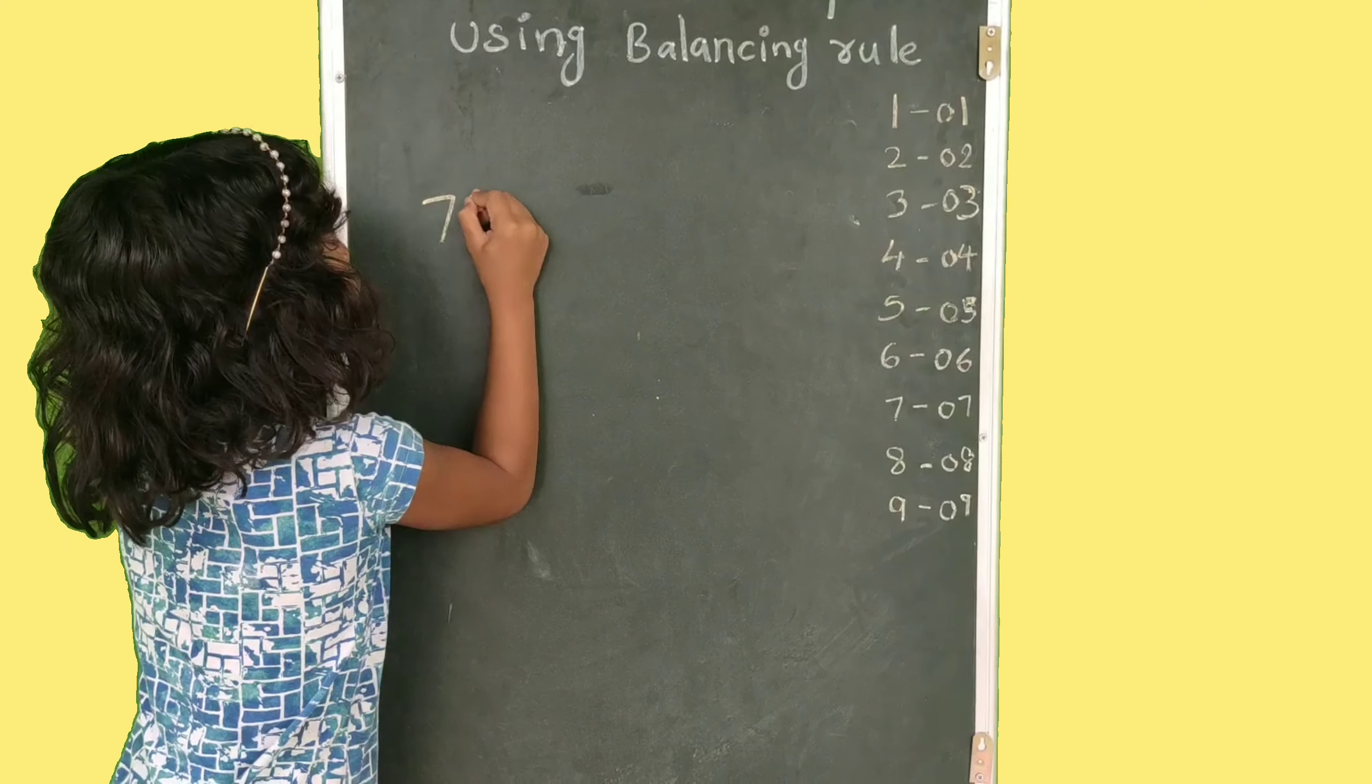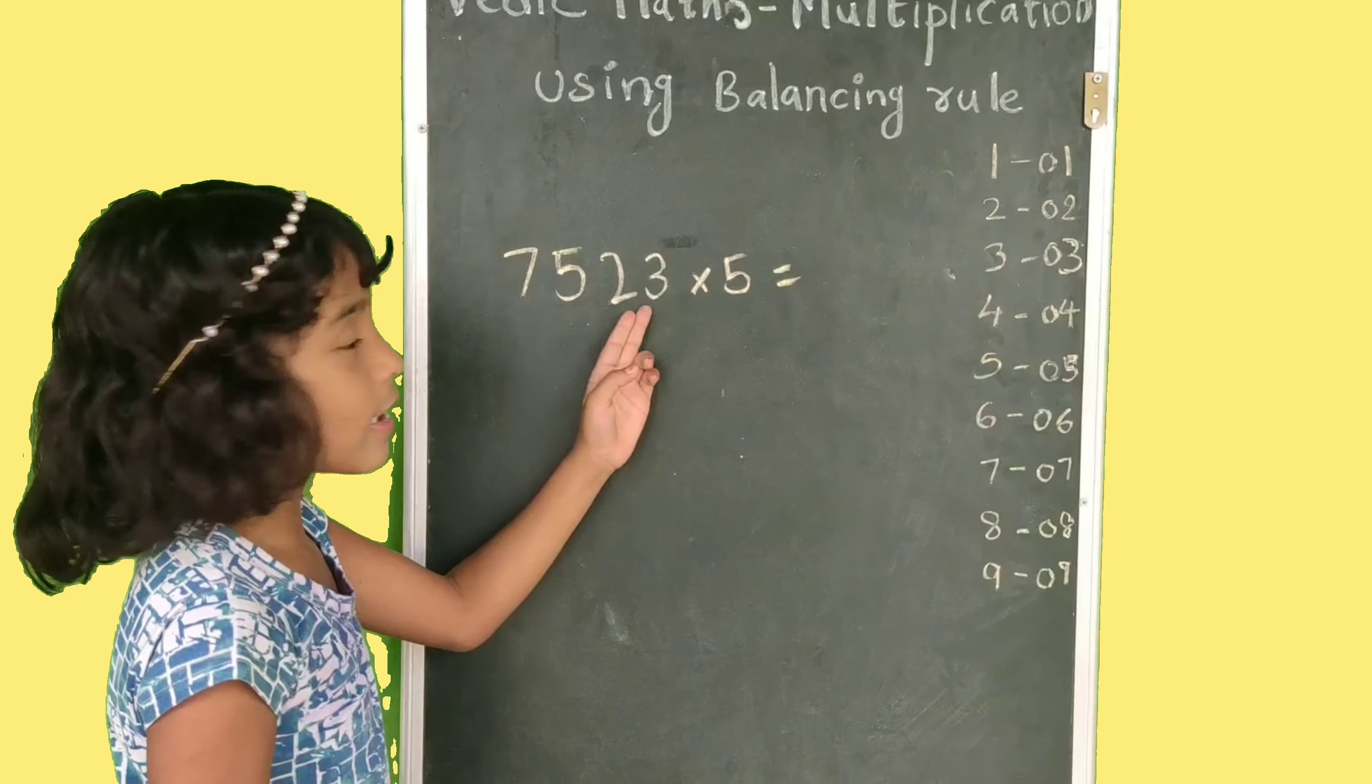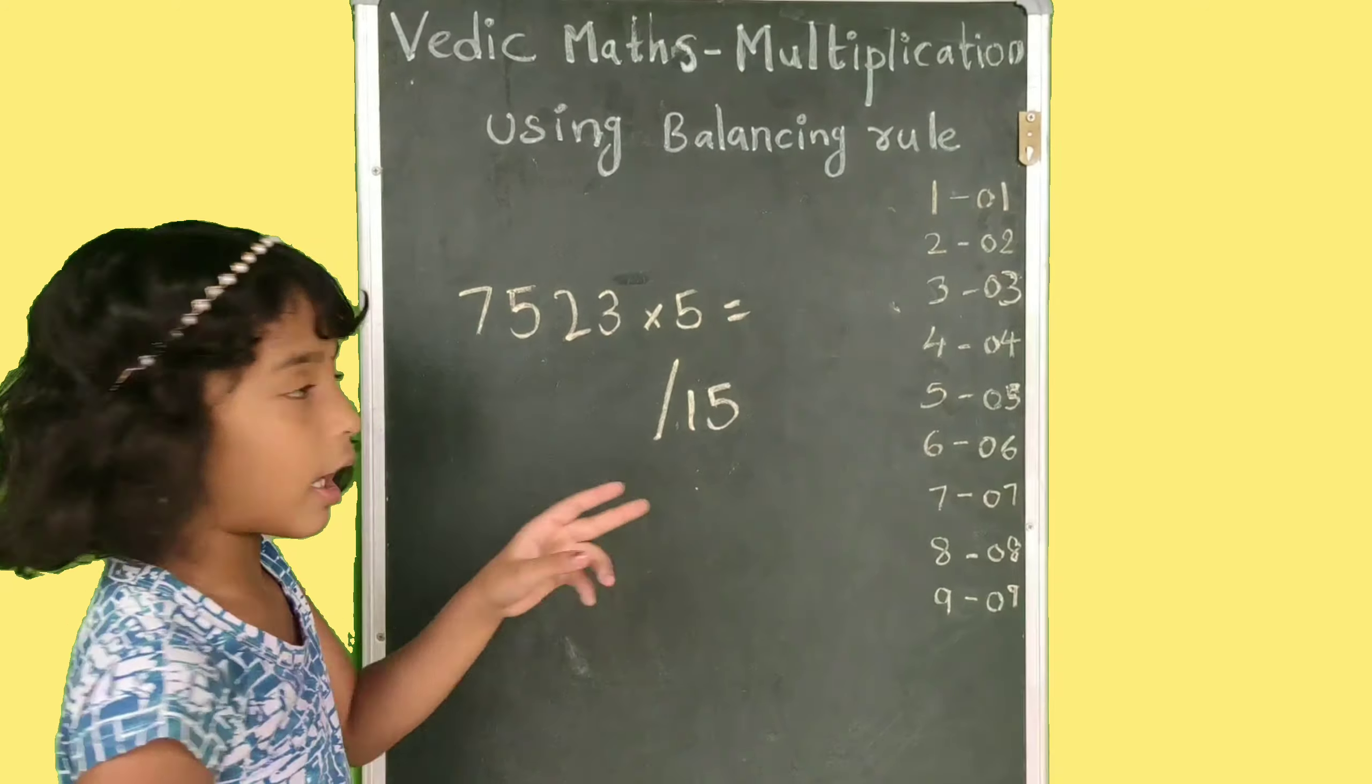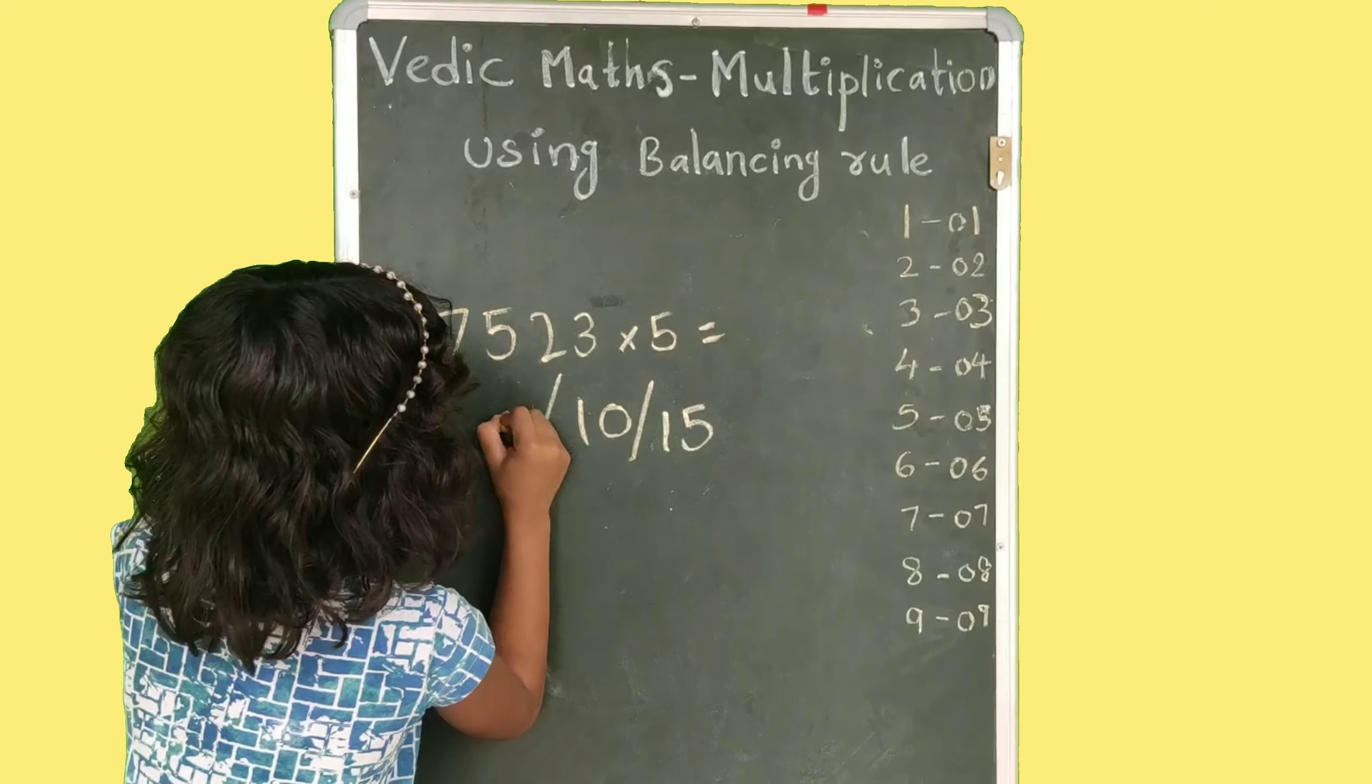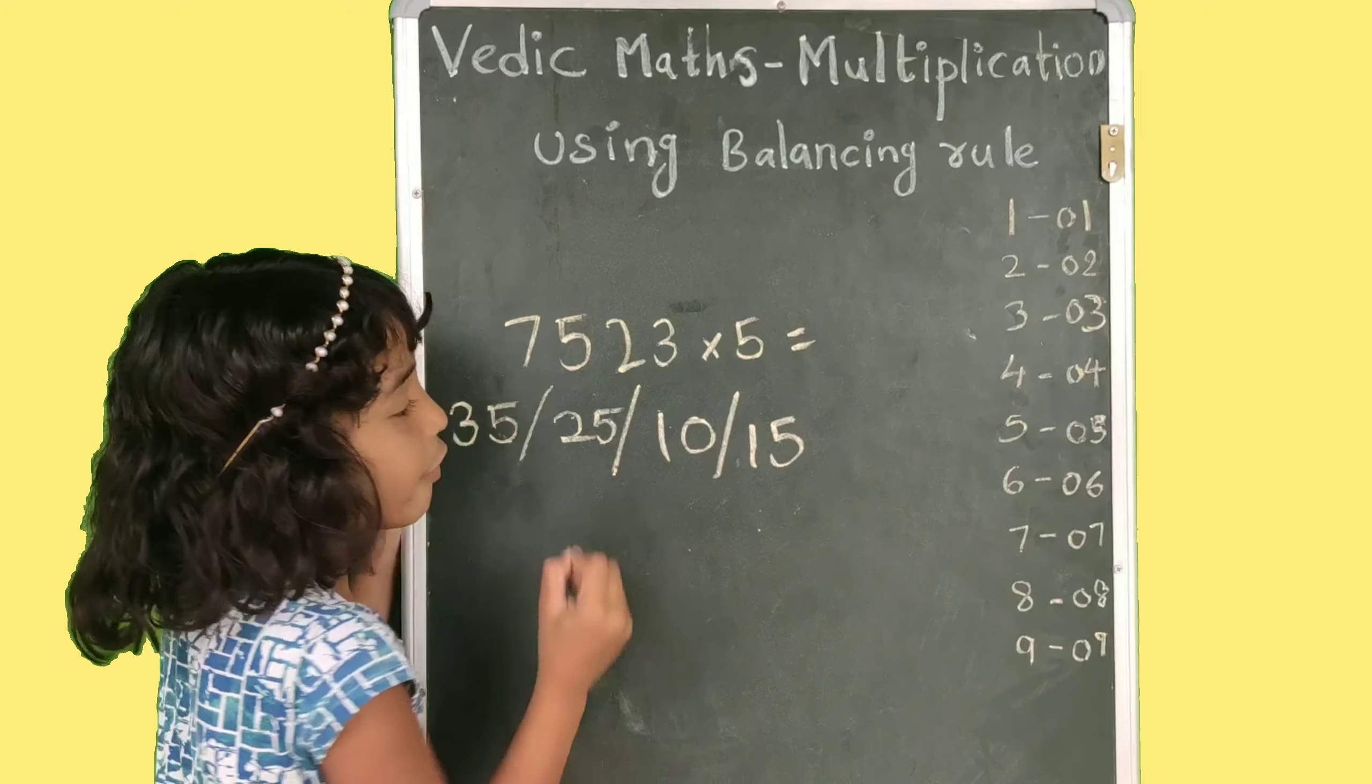7523 multiply 5. Friends, eppur manam e53 saa 15. Slash, 5, 2 saa 10. Slash, 5, 5 saa 25. Slash, 5, 7 saa 35.